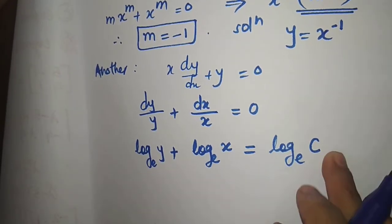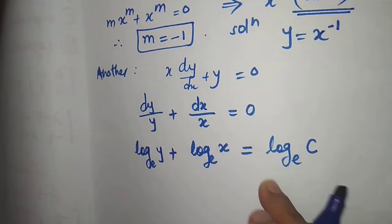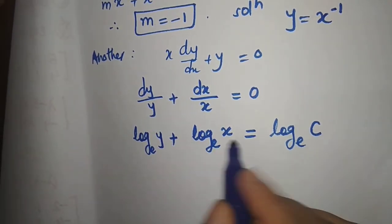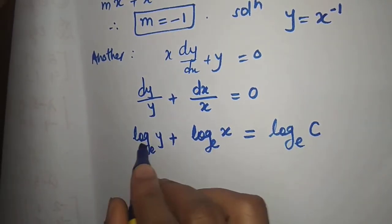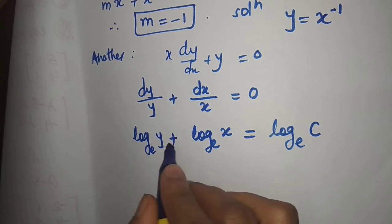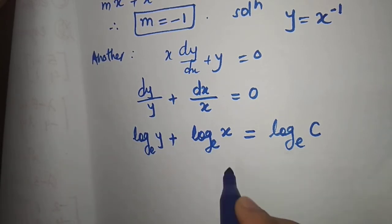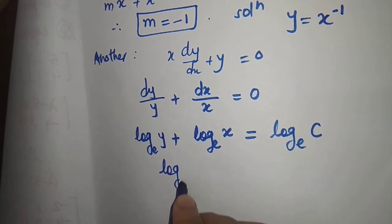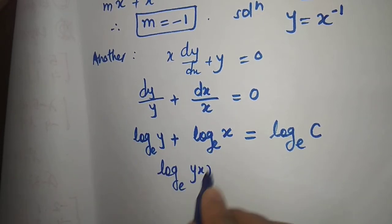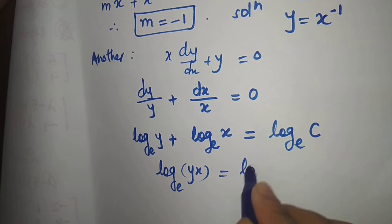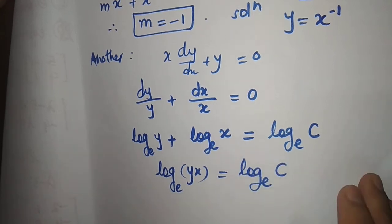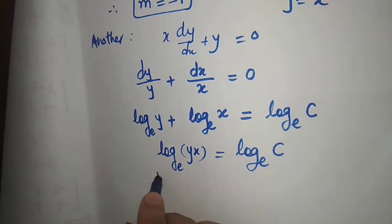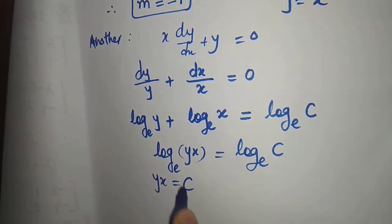By integrating on both sides we will get log base e of y plus log base e of x equal to the constant of integration log base e of c. We can take the constant with log. Using the logarithmic rule — log a plus log b is log ab — we write this as log(yx) equal to log c. Taking exponential on both sides we get yx equal to c.